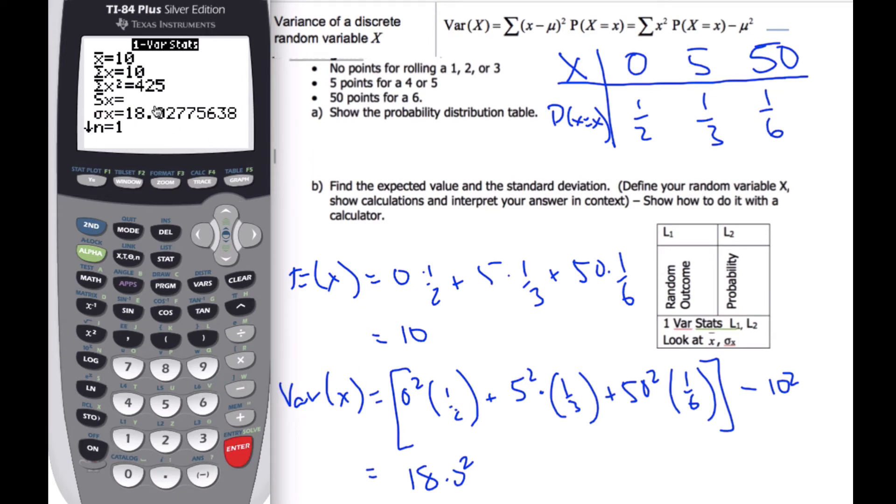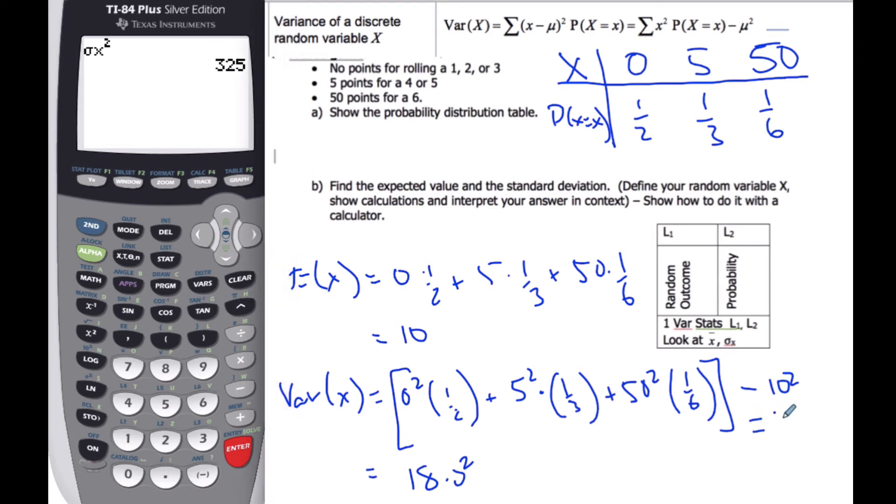If I want to actually find my variance, what I can do, here's a neat little calculator trick, if I go to my variables, go to my statistic variables, here is my standard deviation, and I square it, this will be my variance. So my variance actually equals 325, and so this is my standard deviation here, my standard deviation is 18.0.